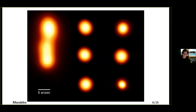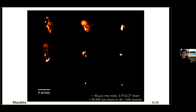To give you a feeling for the increase in resolution: going from six arc seconds to point three arc seconds, this is actual data from actual sources in the field. You can see a nice FR-II galaxy with hotspots and a wide variety of structures. Across the field we reach about 90 micro-Jansky per beam RMS noise with a 0.3 by 0.2 arc second beam. The statistics show it will take about 30,000 CPU hours to do about 100 sources, which is pretty reasonable.